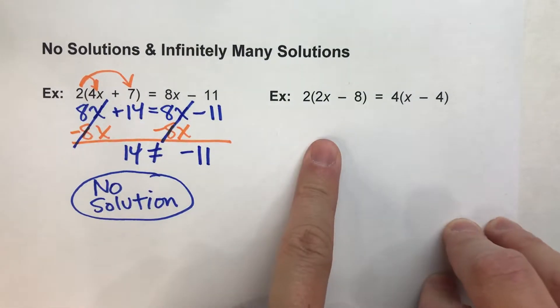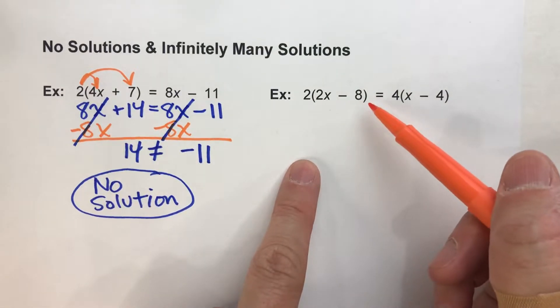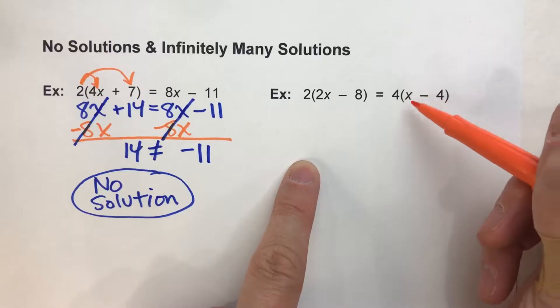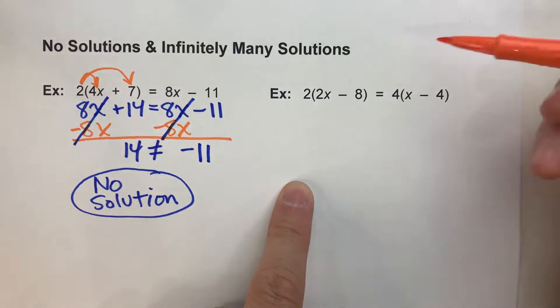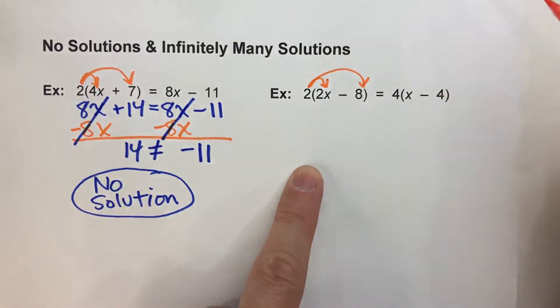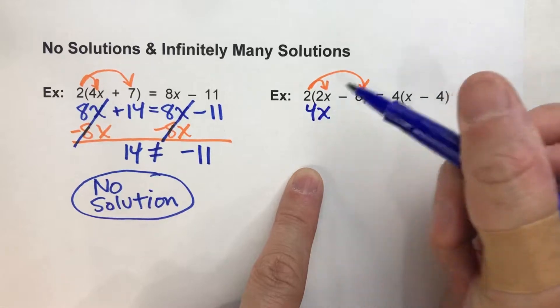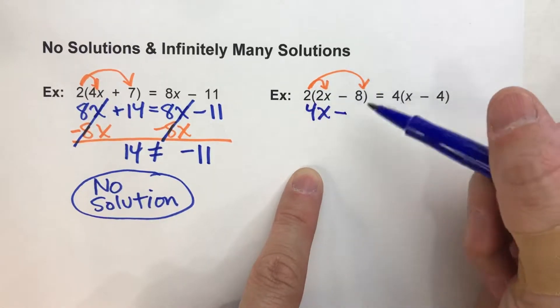Let's take a look at another example here. 2 times in parentheses 2x minus 8 equals 4 times in parentheses x minus 4. All right. So I see parentheses, so my first step is the distributive property.